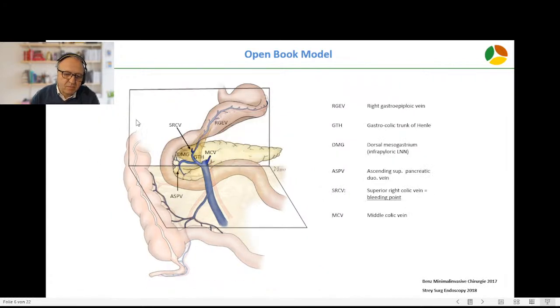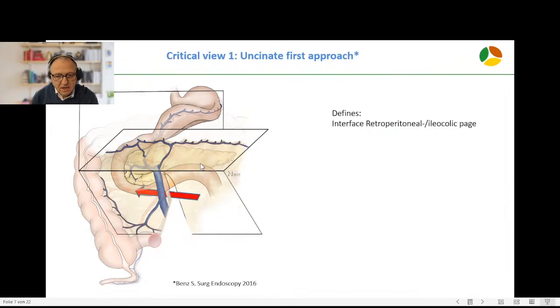It's getting clearer if you remove the transverse mesocolon and look at the mesogastric structures. The gastropiploic artery and vein and the mesogastric fat pad remain in situ, as well as the gastropiploic trunk of Henle and the pancreatic veins.